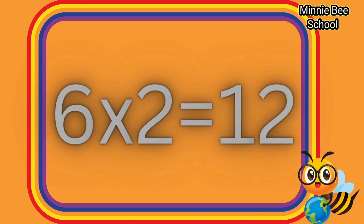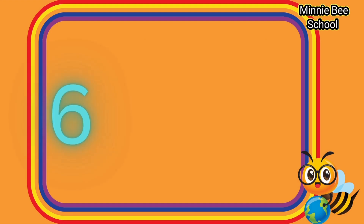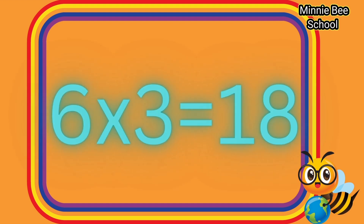Repeat after me. Six times one is six. Six times two is twelve. Six times three is eighteen.